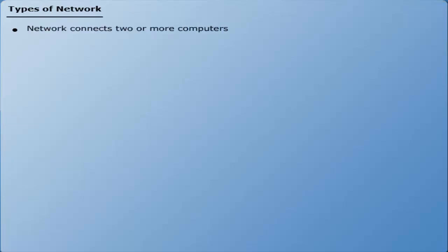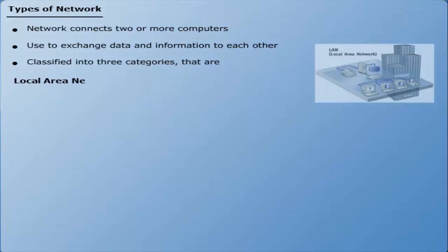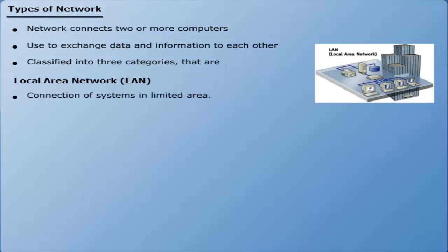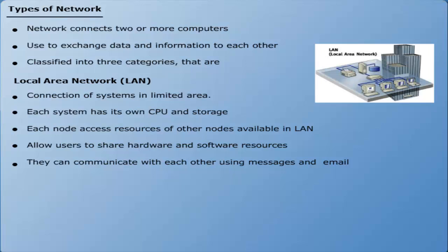A computer network connects two or more systems in order to exchange data and information with each other. Computer networks are classified into three broad categories: LAN, MAN, and WAN. A local area network (LAN) connects a group of computers and devices within a limited geographical area. Each node in a LAN has its own CPU and storage area, and has access to the resources of other nodes in the LAN. It allows users to share hardware and software resources, and communicate with each other by sending messages and emails.